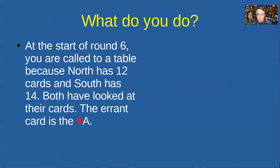Here's another example. Later in the evening, at the start of round six, you're called to a table because North has 12 cards and South has 14. Both have already looked at their hands, so you can't quietly work out which card is missing and move it. The card at fault turns out to be the ace of hearts. What do you do?